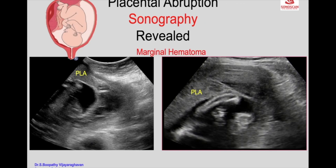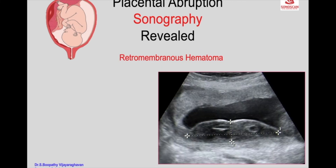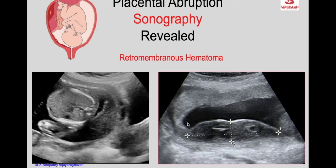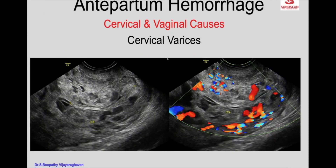In revealed abruption, the hematoma is marginal. The bleeding extends from the placental margin and there may be visible bleeding outside. That is another example of a marginal hematoma. It can also be a retromembranous hematoma away from the placental margin. It may extend from the margin, leak, and cause vaginal bleeding — though this is very rare, it is one of the causes.